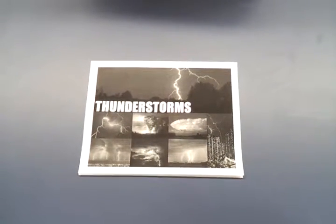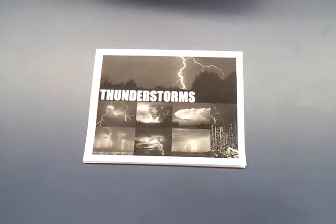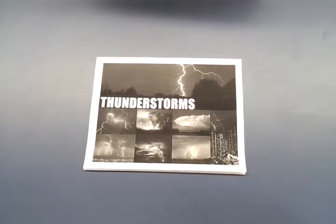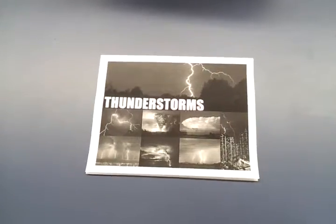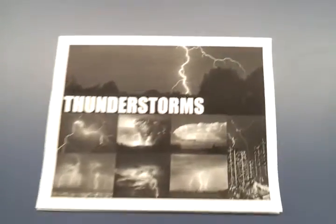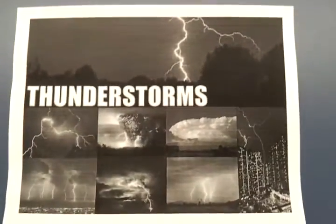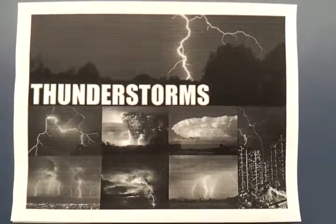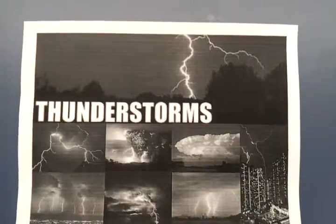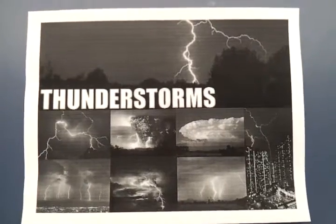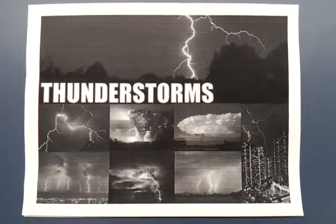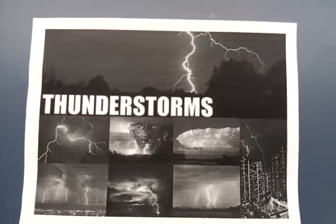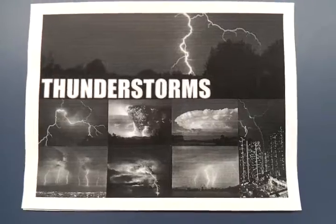A thunderstorm is a form of turbulent weather characterized by the presence of lightning and its acoustic effect on Earth's atmosphere, known as thunder. Thunderstorms are usually accompanied by rain, strong winds, and sometimes snow, sleet, and hail.